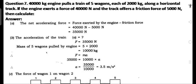Question 7: A 40,000 kg engine pulls a train of 5 wagons each of 2,000 kg along a horizontal track. The engine exerts a force of 40,000 N and the track offers a friction force of 5,000 N. Net accelerating force = 40,000 N − 5,000 N = 35,000 N. Mass of 5 wagons = 5 × 2,000 = 10,000 kg. Acceleration A = 35,000 / 10,000 = 3.5 m/s².